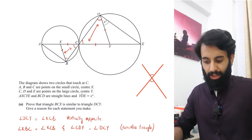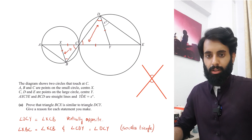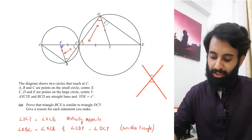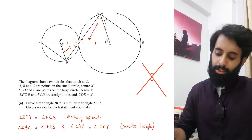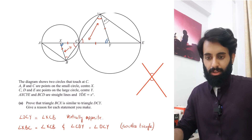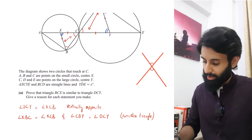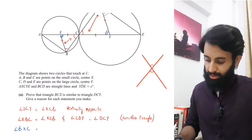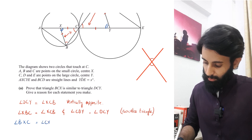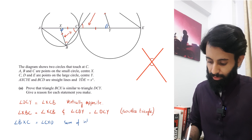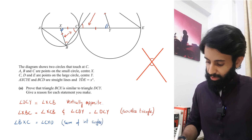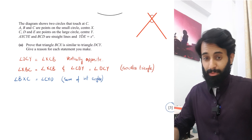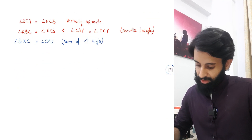We've now shown that two angles from each triangle are equal. That means the third angle must also be equal, by the sum of interior angles of a triangle. So angle BXC equals angle CYD — written as: because of sum of interior angles. This is a three-mark question, so you need three logical statements.